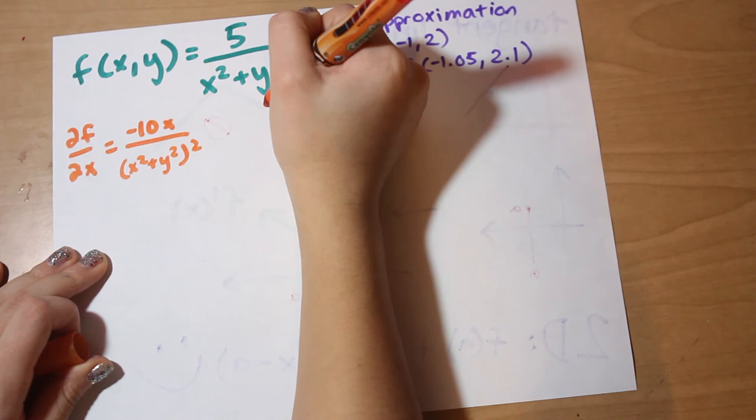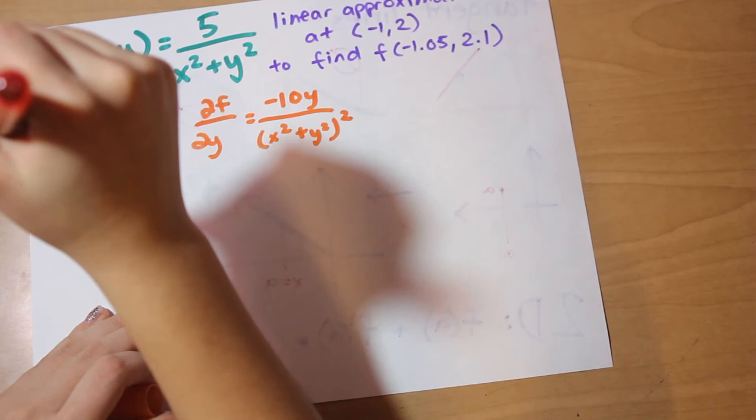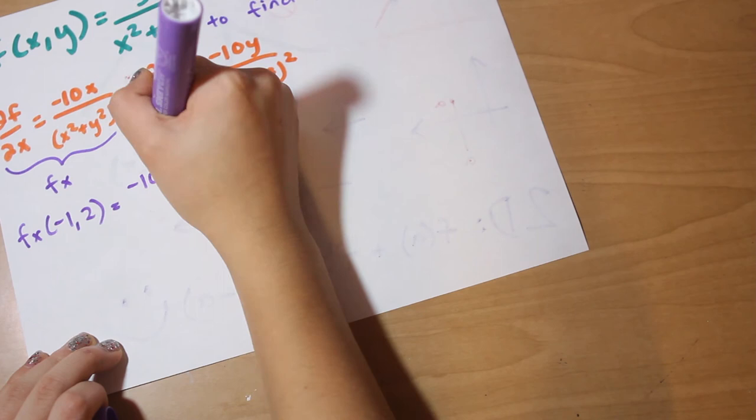So now what we're going to do is plug in that point we were given, which was (-1, 2), to find the partial derivative values at that point. And there they are. Beautiful.